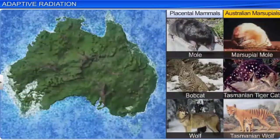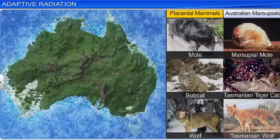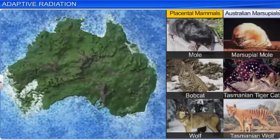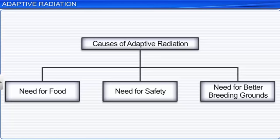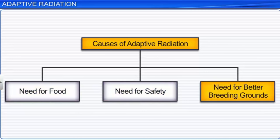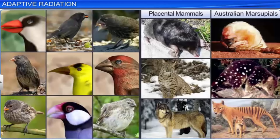On comparing marsupials and placental mammals of Australia, we find similar adaptive radiations between them. Although they have separate lineages, they resemble each other physically. Studies show that the impelling causes of adaptive radiation are the need for food, safety, and for better breeding grounds. Thus, the process of adaptive radiation illustrates how life forms have modified and evolved into new forms.